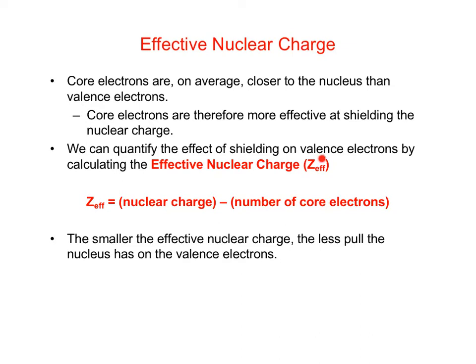We used Z to represent the atomic number, so the charge on the nucleus — the number of protons — is Z. Z effective is the effective nuclear charge: for a valence electron, what charge of the nucleus does it see, taking into account that the core electrons are going to be shielding it. The effective nuclear charge is calculated by taking the actual nuclear charge, the atomic number, and subtracting the number of core electrons. The smaller the effective nuclear charge, the less pull the nucleus has on the valence electrons, and so the valence electrons are going to be less tightly held to that atom.